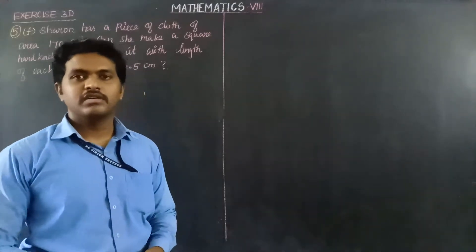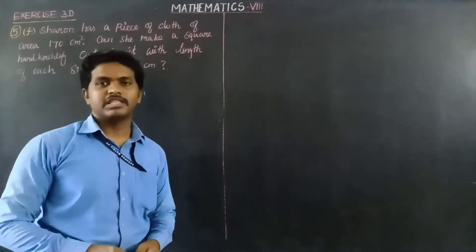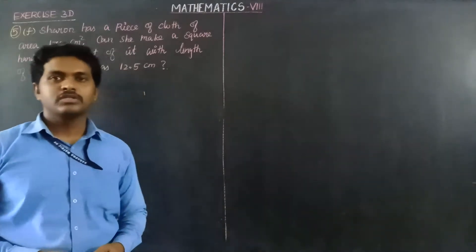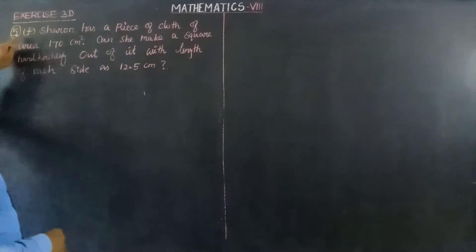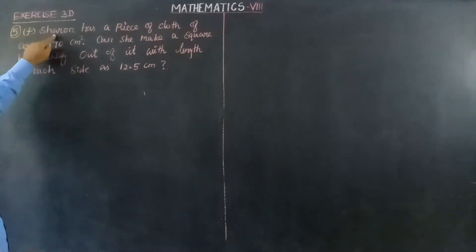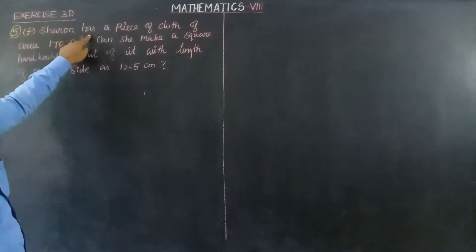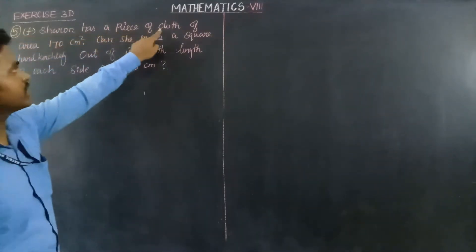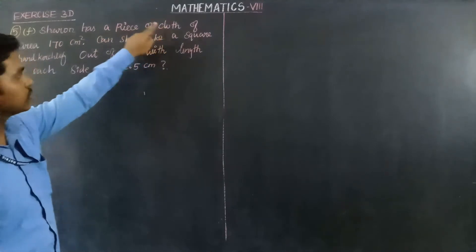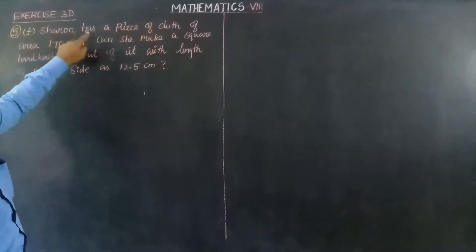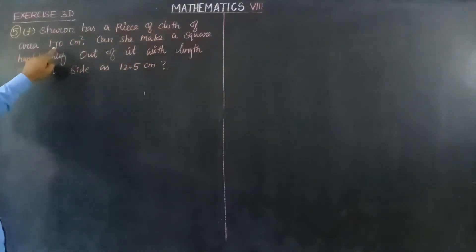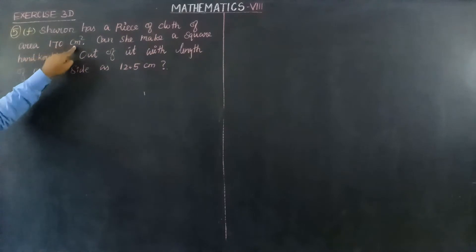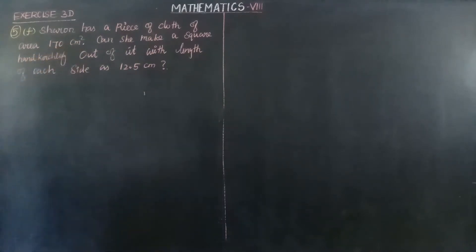Hello students, welcome back to Mathematics class. So next, Exercise 3D, question F. Sharon has a piece of cloth of area 170 cm square.